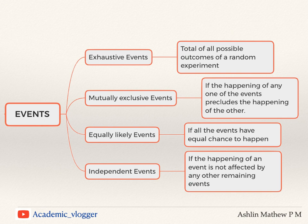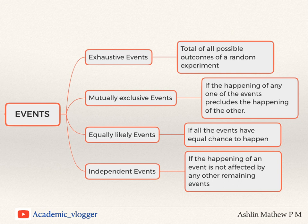Next is the independent event. If the happening of an event is not affected by supplementary knowledge or by the other remaining events, then those events are said to be independent events. For example, in tossing an unbiased coin, the event of getting a head in the first toss is independent of getting a head in the second toss.